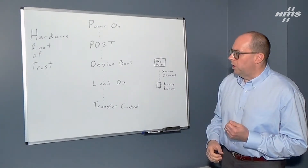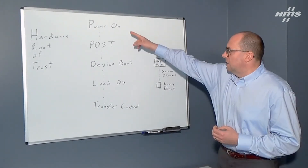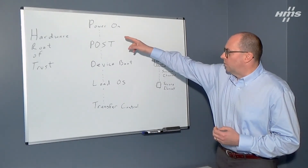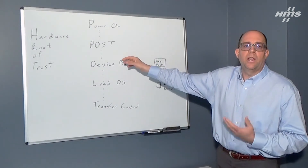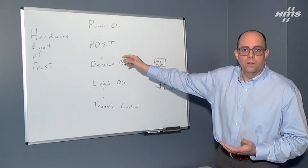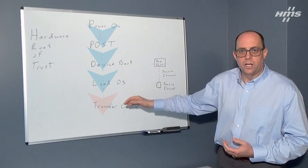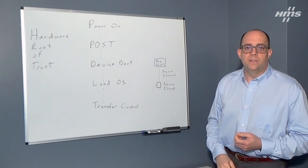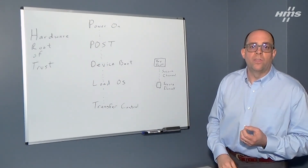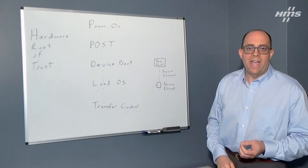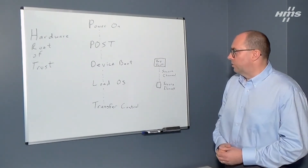Hardware root of trust is really a way of checking through each of these processes and adding — think of it like a security guard that exists between each of these different steps — to verify that all the code running on there is signed, is valid, is keyed properly, and everything along those lines.